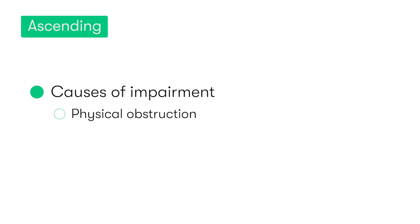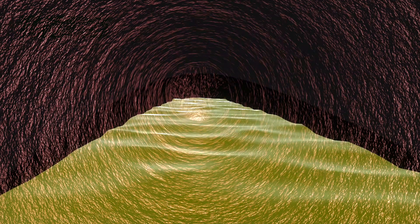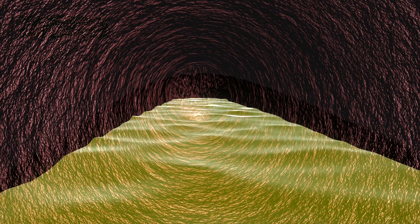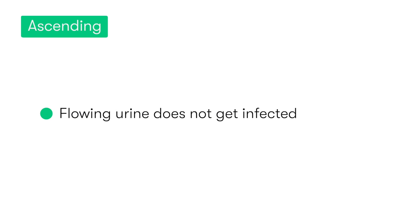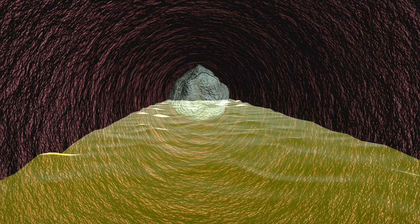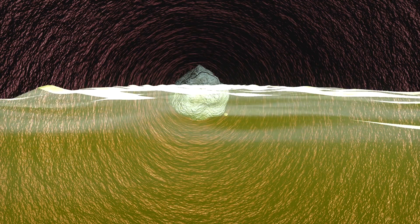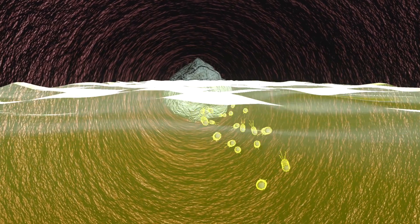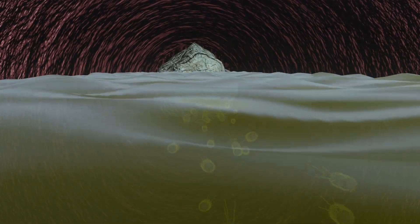Potential causes of impairment of urinary tract outflow include physical obstruction of the tract, reflux of urine, and pregnancy. To understand how impaired drainage increases infection risk, consider the analogy of a stream: a fast-flowing stream has constant water movement with no pooling or stagnation, keeping the water clear and uninfected. However, when an obstruction impairs the flow, pooling occurs, the water becomes stagnant, and infection is able to take over — the same principle applies to ascending urinary tract infections.